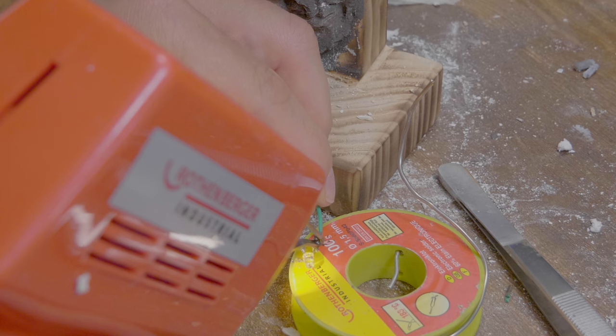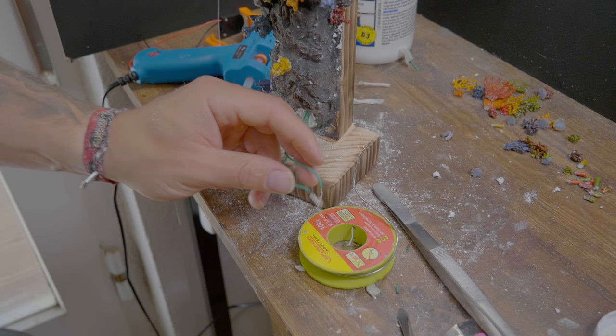A night light without light is, how could it be otherwise, no light. So I solder a small 3 volt LED to a battery holder.